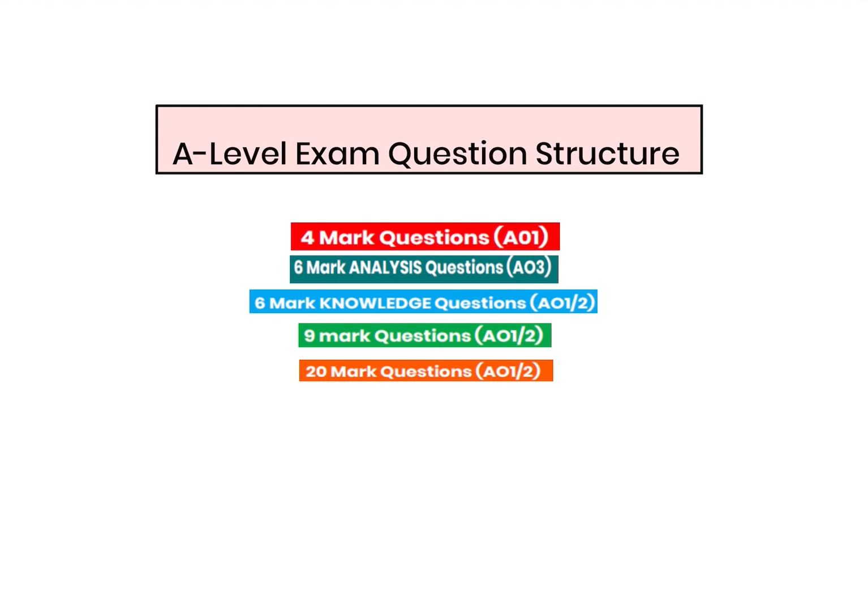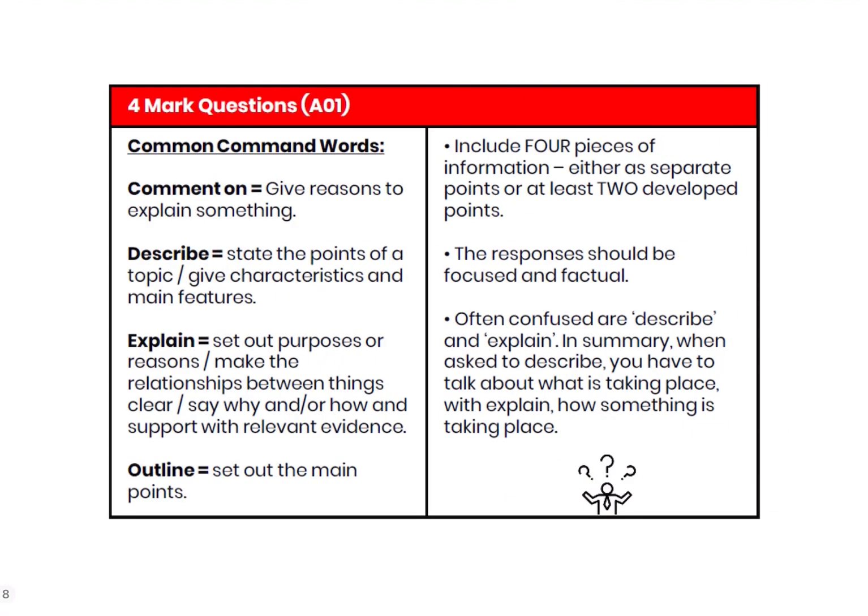Starting with the basics: the four-mark questions have four main command words. The most common ones you tend to see are 'describe' or 'comment on.' If you're commenting on something, think of that as explaining how something got to be the case — the reasons behind why something is the case. 'Explain' is a newer one we're seeing more often, where you just need to set out the conditions for something. 'Outline' does what it says on the tin — what are the main points towards an argument or theory?